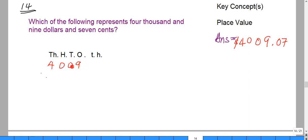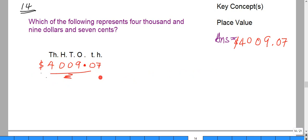We have our decimal point, no tenths, and seven hundredths. Since we're dealing with money, this is what our answer will look like: four thousand and nine dollars and seven cents.